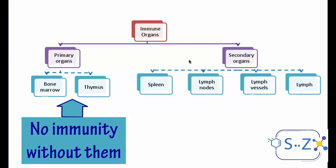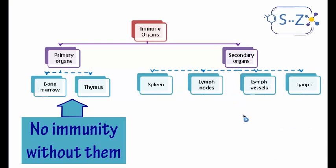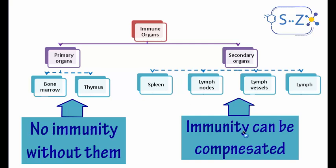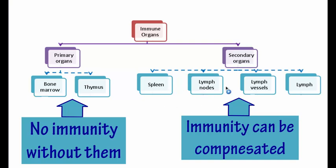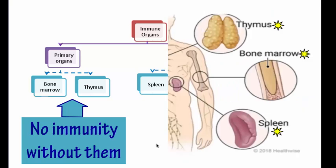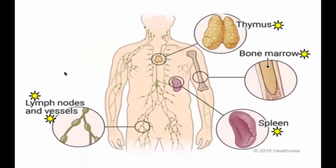The secondary organs are the spleen, lymph nodes, lymph vessels, and lymph. They are called secondary because immunity can be compensated if one of them is lost or removed — immunity can still be present in the body and the person will remain immunized against pathogens even if one of them is lost.